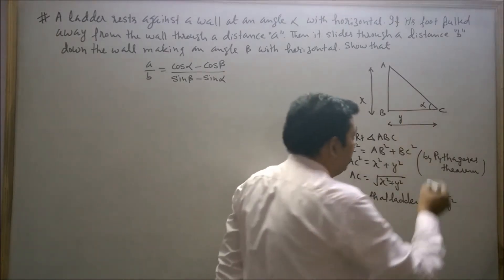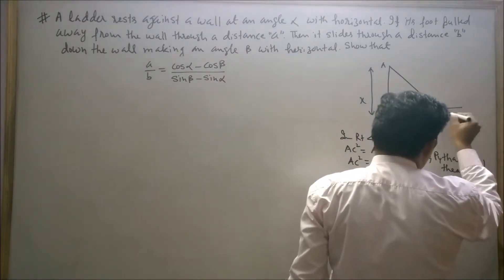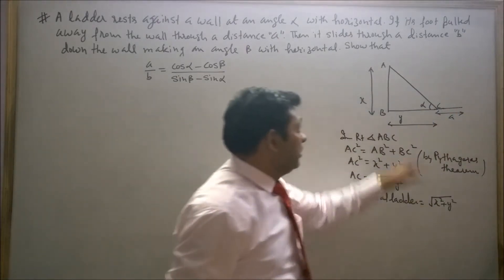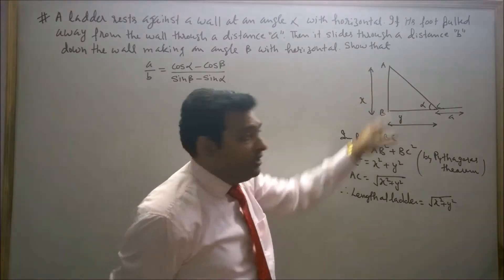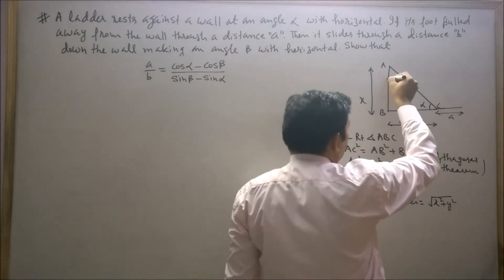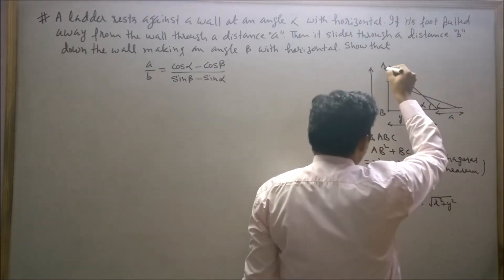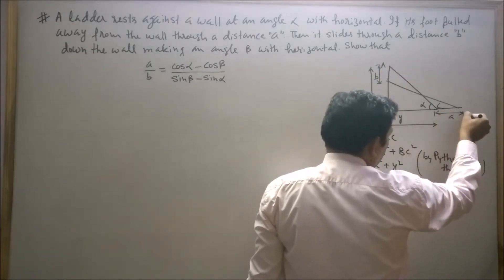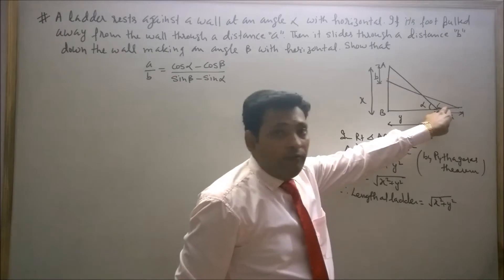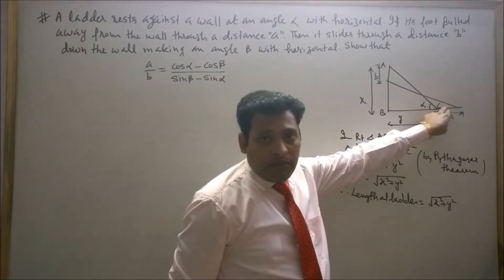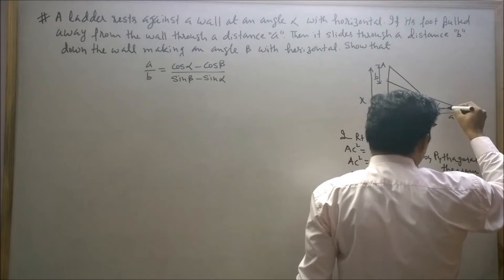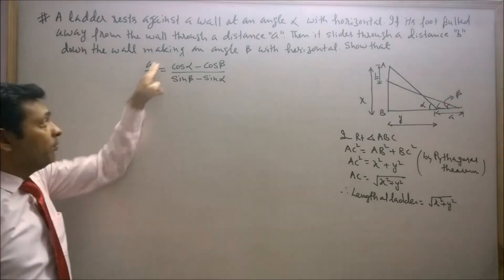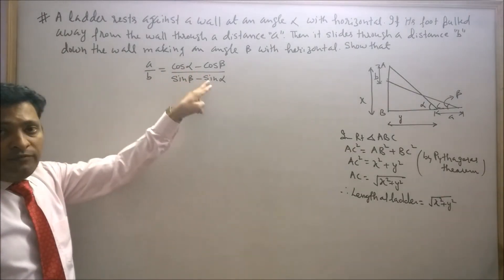Now, if the foot of the ladder is pulled away through a distance A, then it will slide down through a distance B. This distance is B and this distance is A. The ladder will then make an angle beta with the horizontal. We have to prove that A upon B equals cos alpha minus cos beta upon sin beta minus sin alpha.